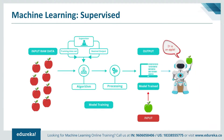Starting with supervised learning. The mathematical definition: supervised learning is where you have input variables X and an output variable Y, and you use an algorithm to learn the mapping function from the input to the output — that is Y = f(X). The goal is to approximate the mapping function so that whenever you have new input data X, you can predict the output variable Y for that data.